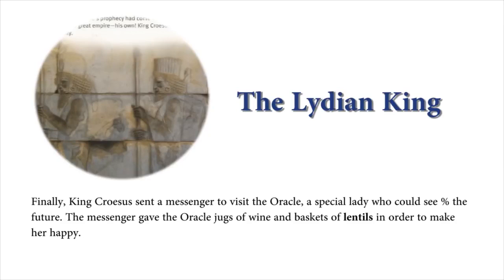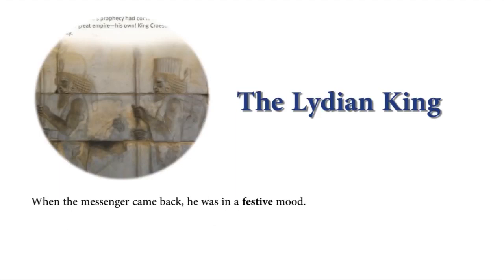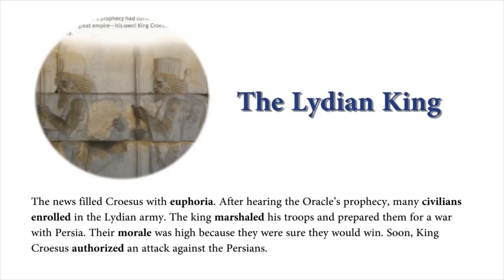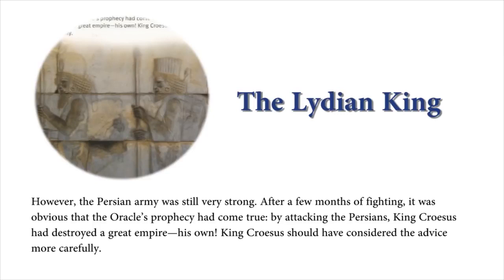Finally, King Croesus sent a messenger to visit the oracle, a special lady who could see the future. The messenger gave the oracle jugs of wine and baskets of lentils in order to make her happy. When the messenger came back, he was in a festive mood. 'What was the oracle's prophecy?' asked King Croesus. The jolly messenger responded: 'She said that if you attack Persia, you will destroy a great empire.' The news filled Croesus with euphoria. After hearing the oracle's prophecy, many civilians enrolled in the Lydian army. The king marshaled his troops and prepared them for a war with Persia. Their morale was high because they were sure they would win. Soon, King Croesus authorized an attack against the Persians. However, the Persian army was still very strong. After a few months of fighting, it was obvious that the oracle's prophecy had come true. By attacking the Persians, King Croesus had destroyed a great empire — his own. King Croesus should have considered the advice more carefully.